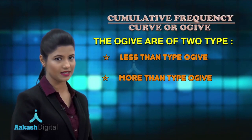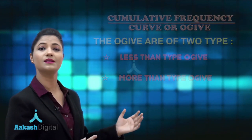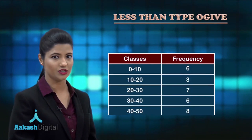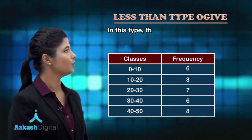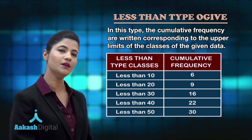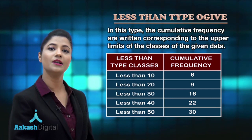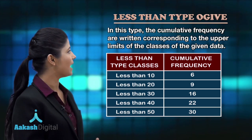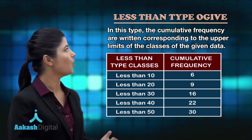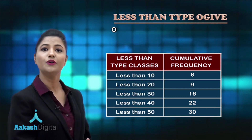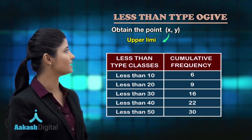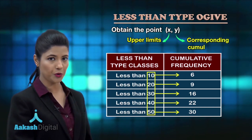Let's first discuss the less than type ogive. In this case, you draw the cumulative frequency distribution table of less than type. The corresponding cumulative frequencies are written corresponding to the upper limits of the classes. After obtaining this cumulative frequency distribution table of less than type, you obtain the points whose x-coordinates are the upper limits of the classes and y-coordinates are their corresponding cumulative frequencies.